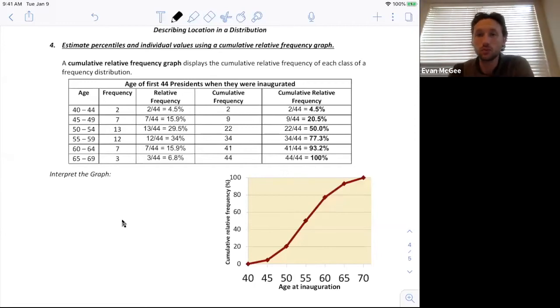This is the final video from 2.1. We're going to talk about cumulative relative frequency graphs, using them to estimate percentiles. So here is a table showing the age when the first 44 presidents were inaugurated. A cumulative relative frequency graph displays the cumulative relative frequency of each class of a frequency distribution. Sounds complicated, but it's really not that tough.